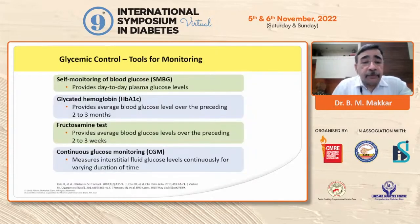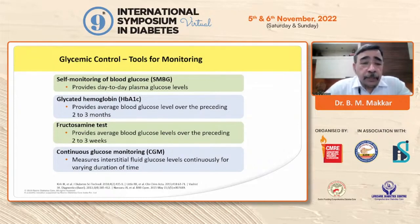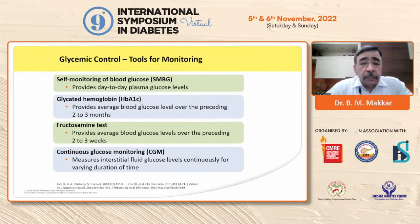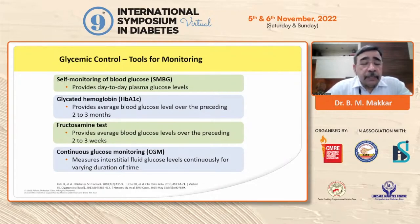When looking at good glycemic control, we can't control well unless we are monitoring how glucose levels are doing. Glucose levels keep changing minute to minute, within days and over days. The most commonly used modality for monitoring is self-monitoring of blood glucose, which provides day-to-day plasma glucose levels.